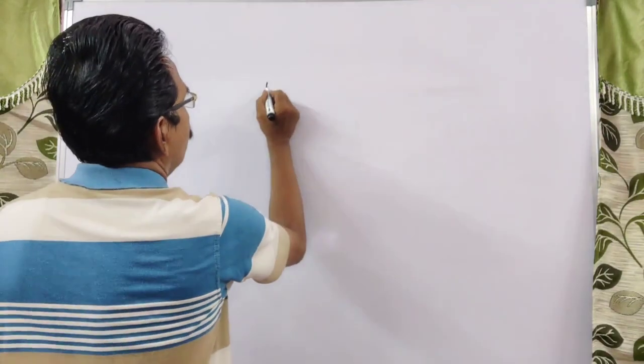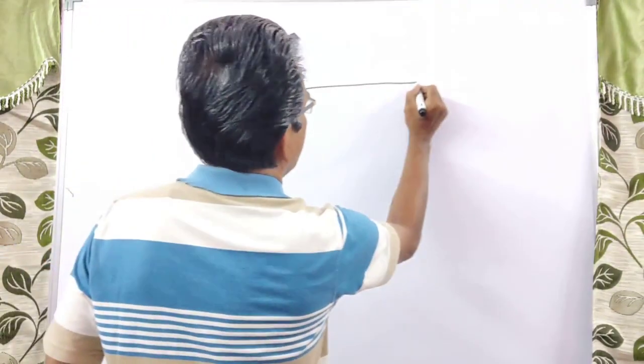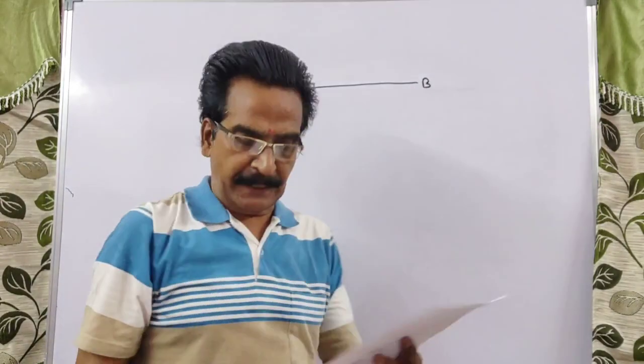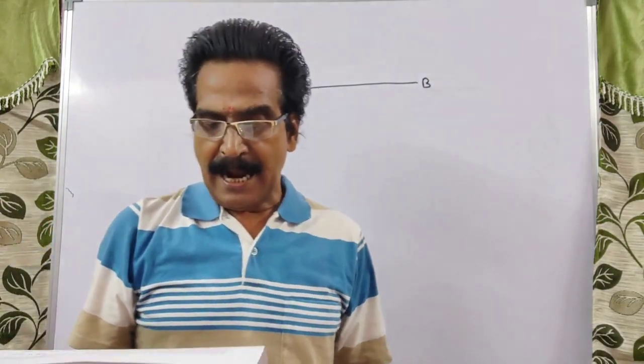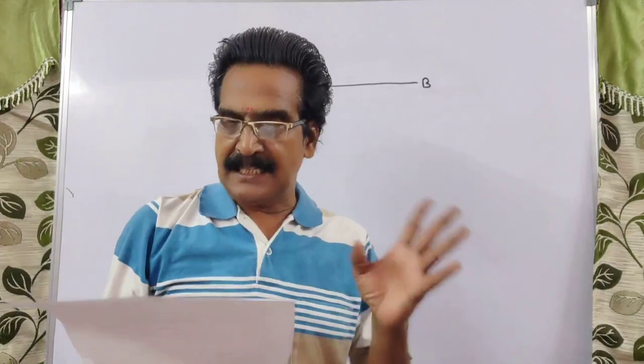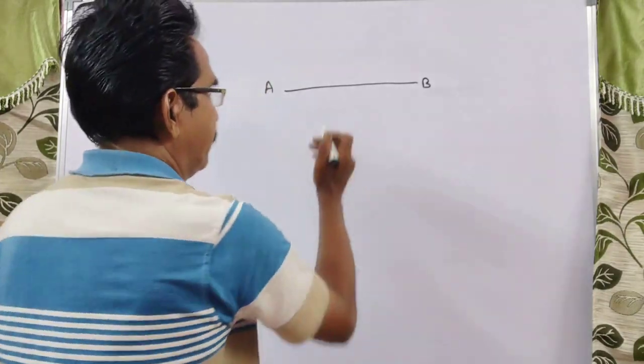Hi friends, good morning, let us see our next problem. A boat takes 19 hours for travelling downstream from point A to B and coming back to a point C, which is at midway between A and B.